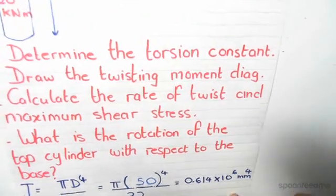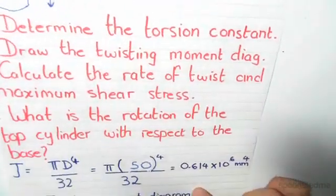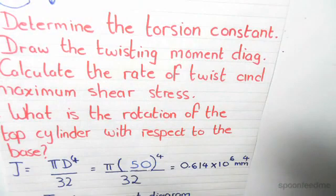Looking back at this cylinder, our diameter is 50mm. Therefore, our torsion constant equals π times 50 to the power of 4 divided by 32, which gives us 0.614 times 10 to the 6 mm to the power of 4.